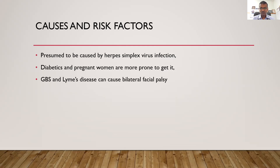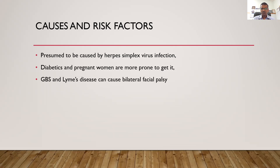The exact cause of Bell's Palsy is not known, but a lot of research has gone in and it is thought to be a viral infection. Most commonly, herpes virus has been implicated. The inflammation caused by the herpes virus, and also the immune response — when our body tries to fight the herpes virus, the antibodies produced can also cause inflammation and damage of the facial nerve. People with diabetes, high blood pressure, and pregnant women are more prone to get it. There is no real difference between genders, and the most common age group is 15 to 60 years of age.